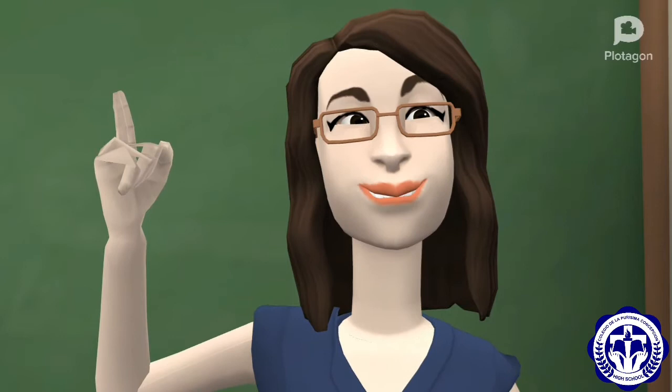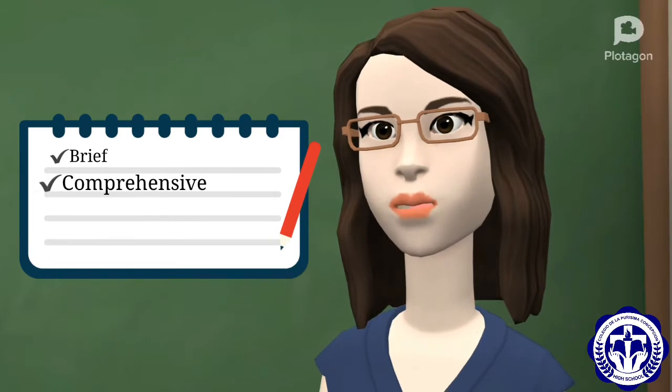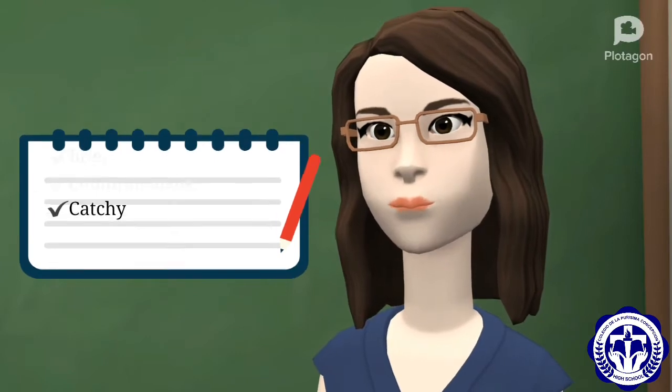The first part of a research plan is the title of the study. It is written in an inverted pyramid form. It should be brief, comprehensive, and catchy.